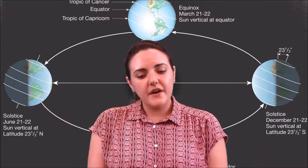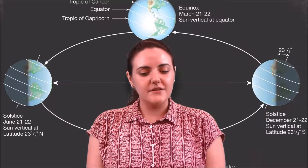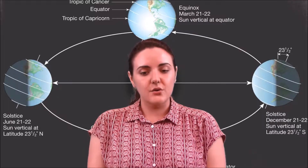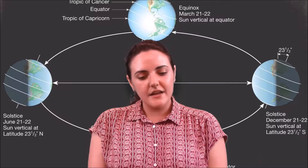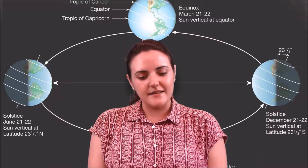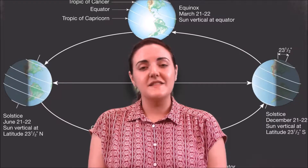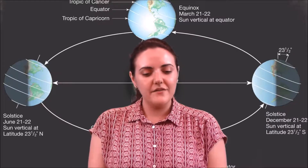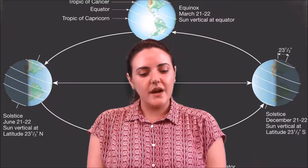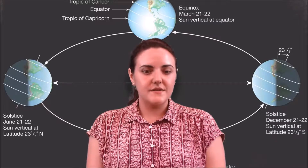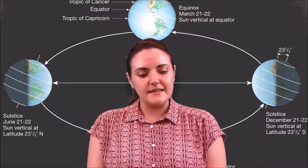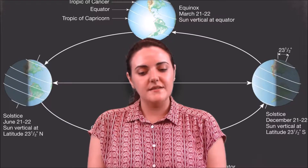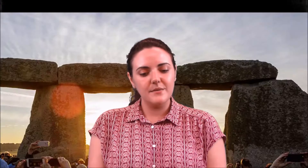Day is usually defined as the period when sunlight reaches the ground in the absence of local obstacles. On the date of the equinox, the center of the sun spends a roughly equal amount of time above and below the horizon at every location on the earth, so night and day are about the same length. Sunrise and sunset can be defined in several ways, but a widespread definition is the time that the top limb of the sun is level with the horizon.